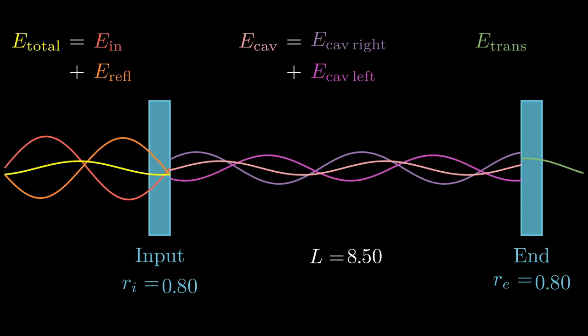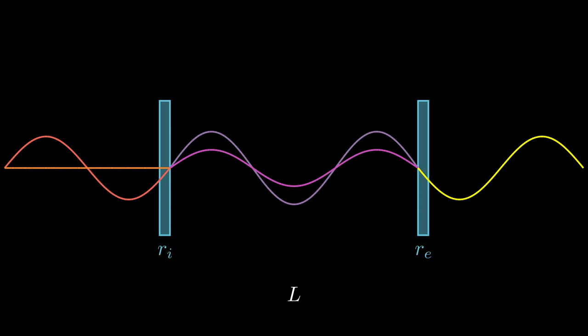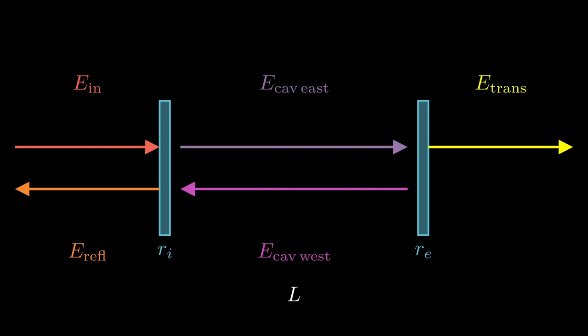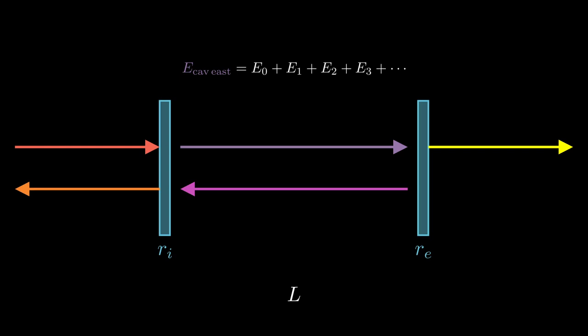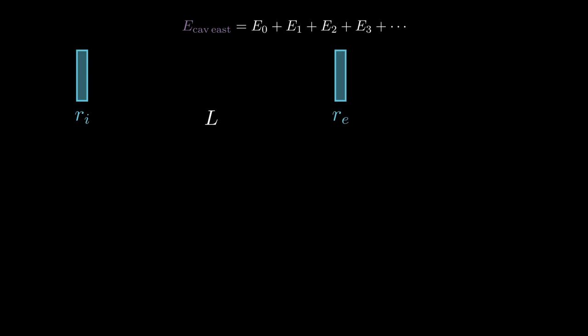Let's see if we can derive where this increase comes from. Again, we'll recreate the Fabry-Perot mirrors and the laser beams, but we'll simplify the beams down to just arrows. We want to derive the cavity gain, which is the ratio of the cav east beam and the cavity input beam. Because it's inside a two-meter cavity, the cav east beam is actually made up of an infinite series of electric fields. Let's look at each term in the sum. The first term, E0, is straightforward. It comes directly from the input beam transmission through the input mirror.